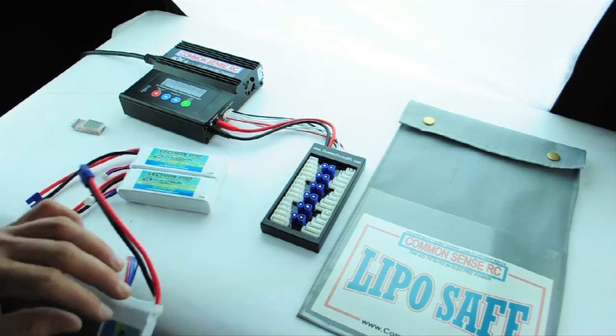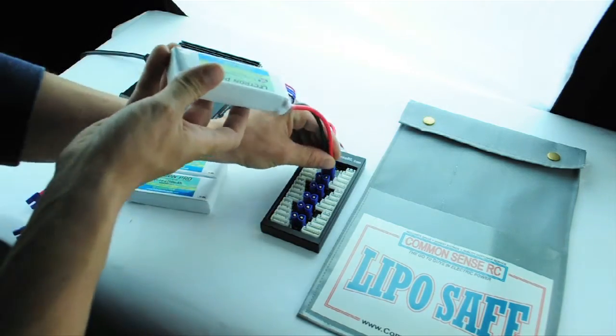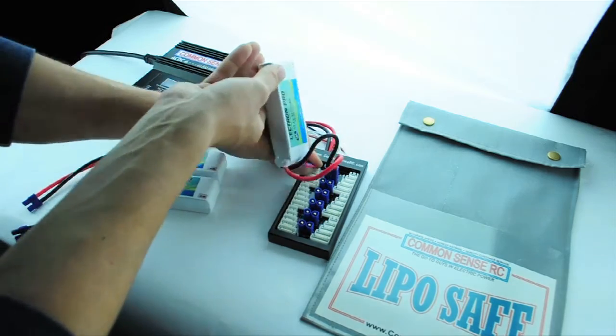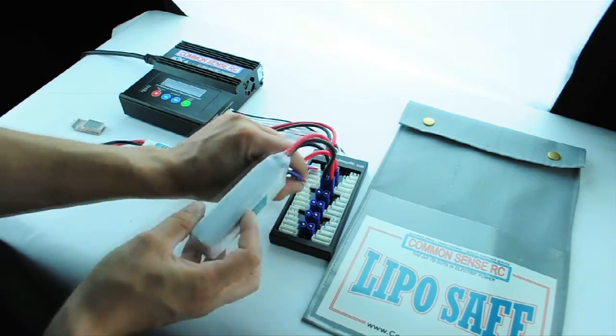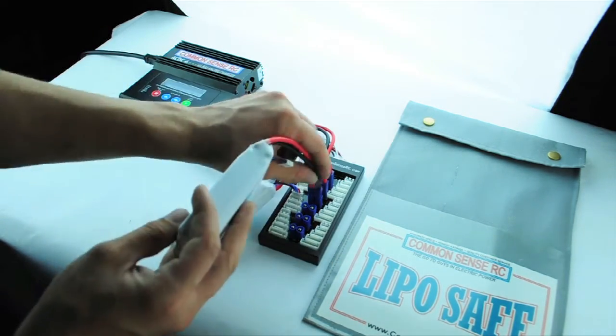If you're using the UMX para board, the balancing is done through the charge leads, so you will only be making one connection per battery. If you're using the micro connector para board, there is no balancing plug because the batteries are single cell.